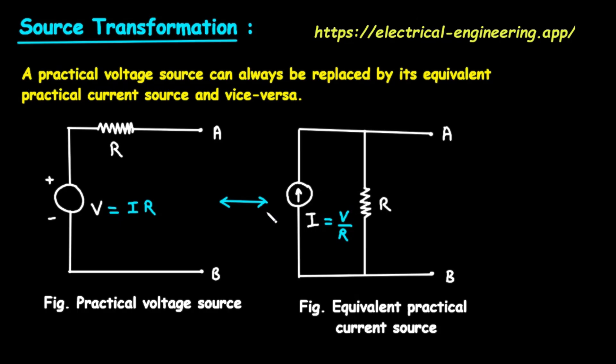The most powerful word in our main sentence is equivalent. It means that from the perspective of any circuit connected to terminals A and B, these two different sources, the voltage source on the left and the current source on the right, are indistinguishable. They will deliver the exact same voltage and current to the external circuit. This is why we can replace one with the other. Finally, the phrase and vice versa means this is a two-way street. We can transform a voltage source into a current source, and we can also transform a current source back into a voltage source. The bright blue double-headed arrow between the two diagrams visually represents this reversible process.